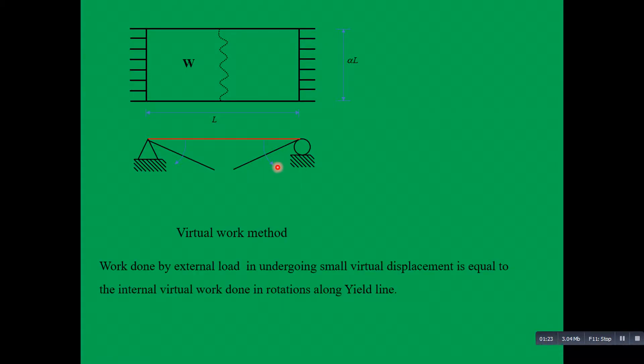We use the virtual work method to determine the failure moment. According to virtual work method, work done by the external load in undergoing a small virtual displacement equals the internal work done in rotation along the yield line.